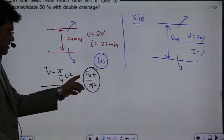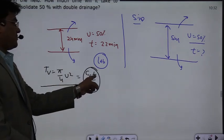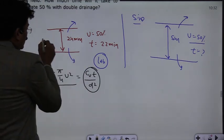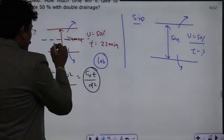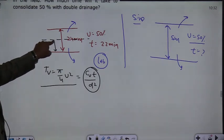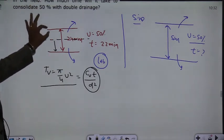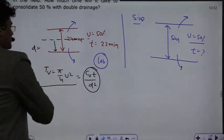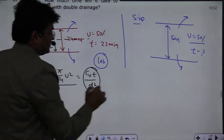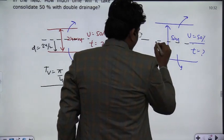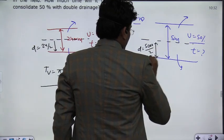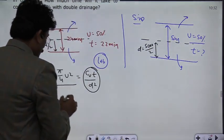The equation is: time factor Tv equals pi by 4u square equals cv into t divided by d square, where cv is the consolidation coefficient and t is your time which is 22 minutes, and d means maximum distance which a fluid particle has to go out. In the middle of the layer, the depth of the particle - the fluid particle or water molecule has to travel - the d value will be this depth divided by 2.